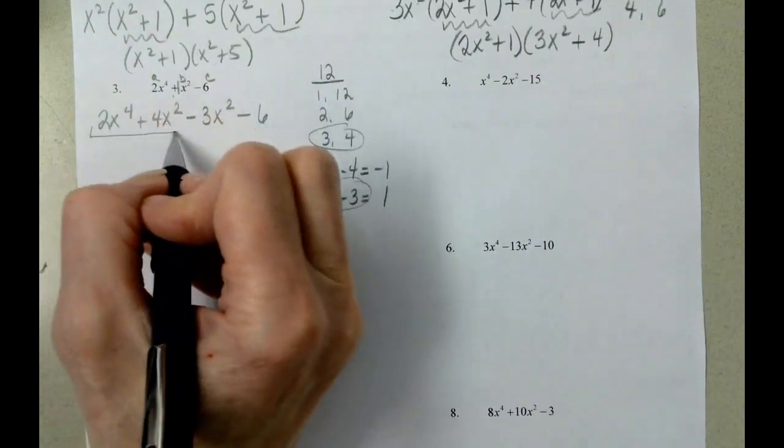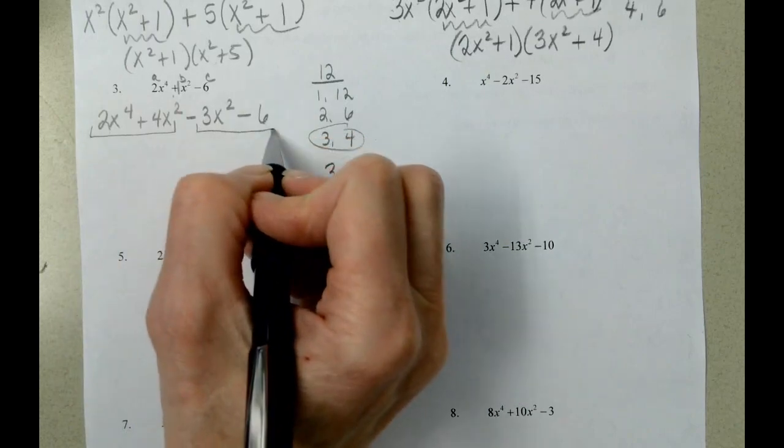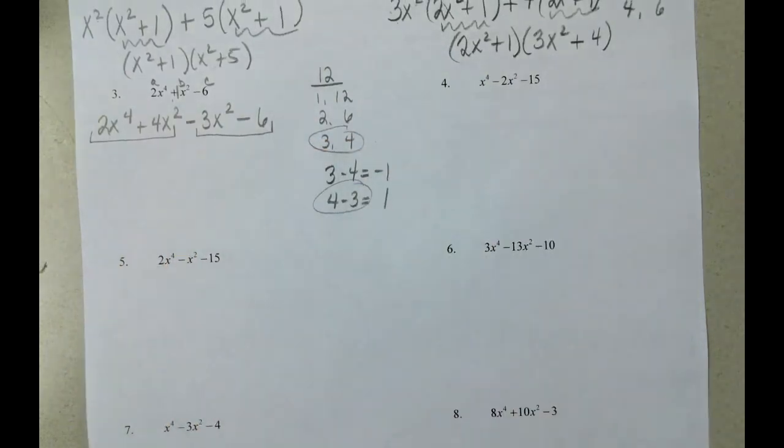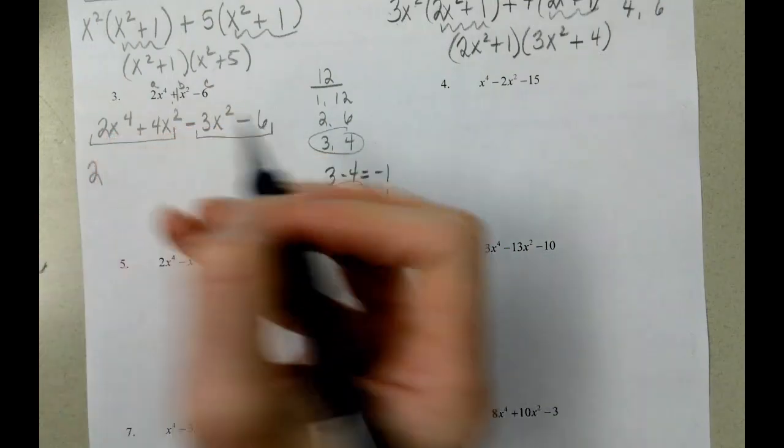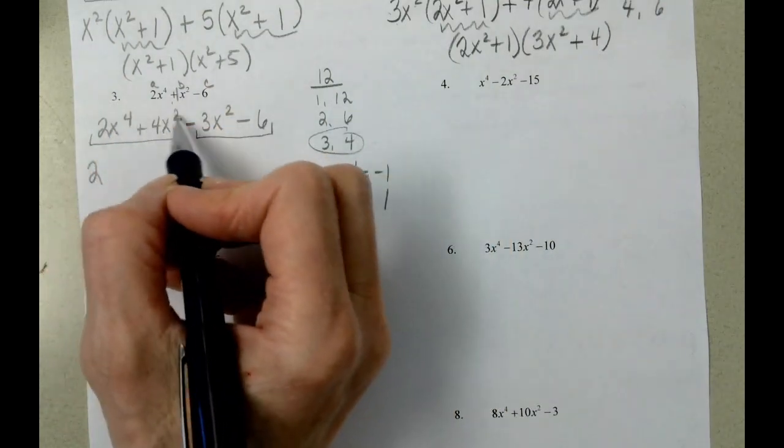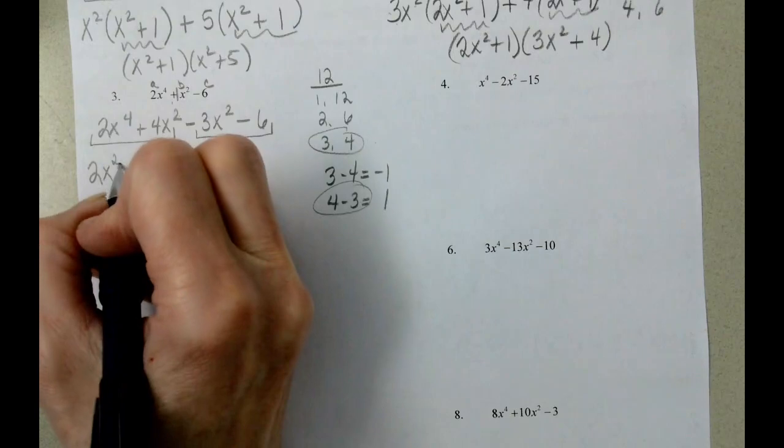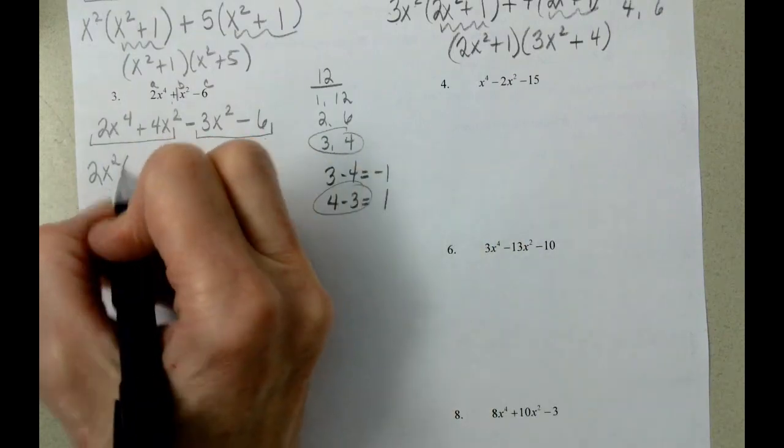And then here is a group. Here is a group. Biggest number that divides into 2 and 4 is 2. Between x to the 4th and x squared is going to be x squared. Lowest exponent.